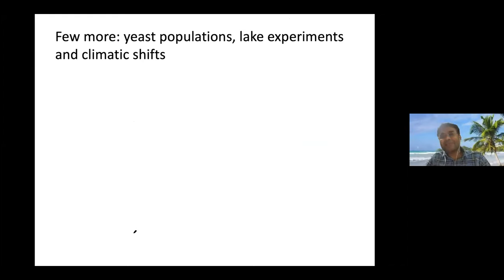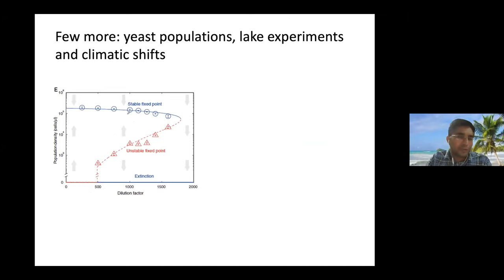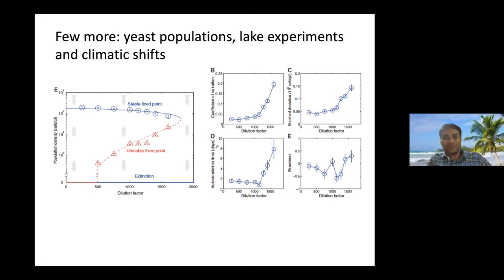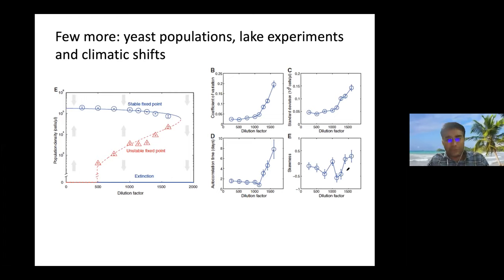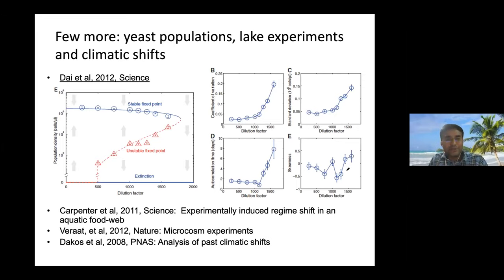Since then, there have been more experimental verifications. For example, in yeast populations, what's remarkable is the bifurcation diagram looks almost exactly like the mathematical model — a stable fixed point, unstable fixed point, and another stable fixed point corresponding to extinction. Subjecting these populations to stress, the coefficient of variation, standard deviation, and autocorrelation all increase. However, in this specific experiment they did not find strong evidence for increasing skewness. The point is that certain mathematical predictions are actually testable and verified using these experiments.